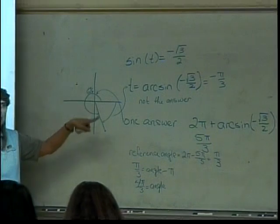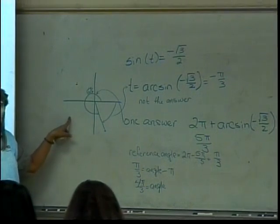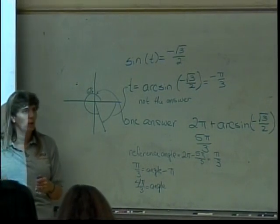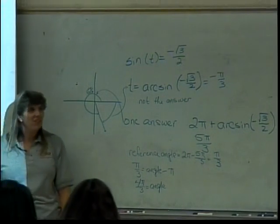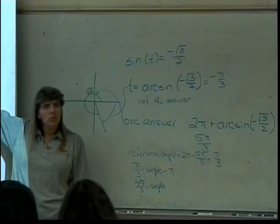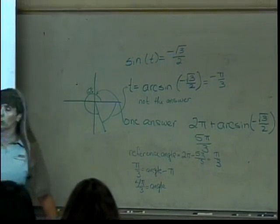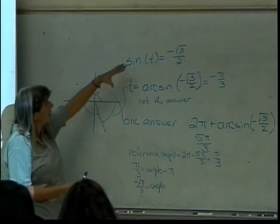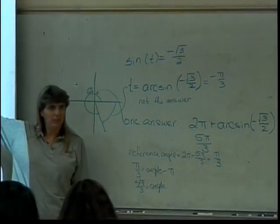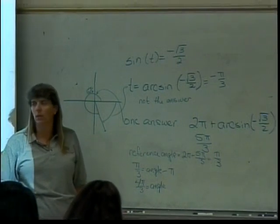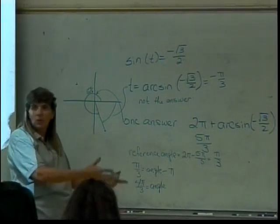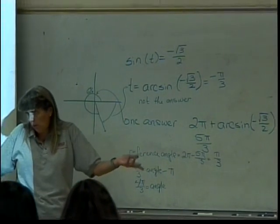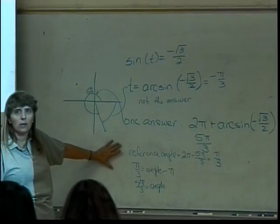By the way, I personally consider this the hard way to do this problem. How many of you could have spit out 4π over 3 and 5π over 3 sooner or later as the answers to this question? If you could have, that's kind of what I expect you to do. You should know your unit circle, and this is basically one time around your unit circle and a number you should recognize as being one of the angles we know. So, I would not expect all of this work for a problem like this.